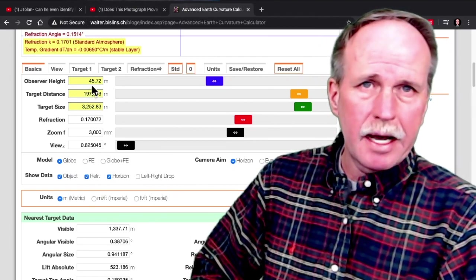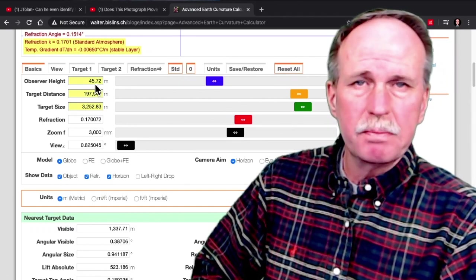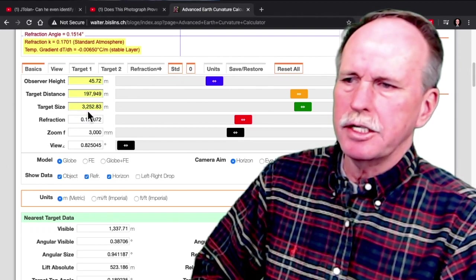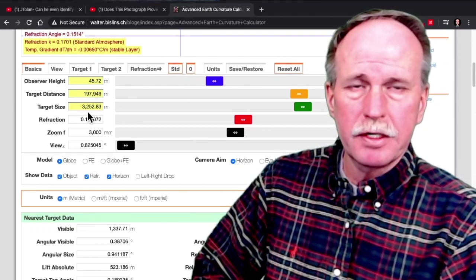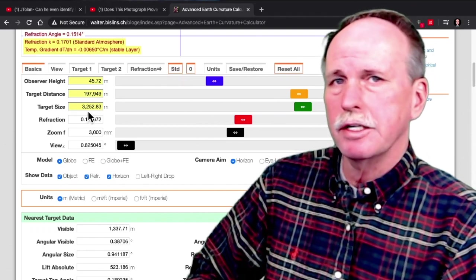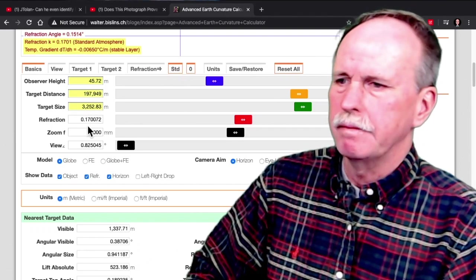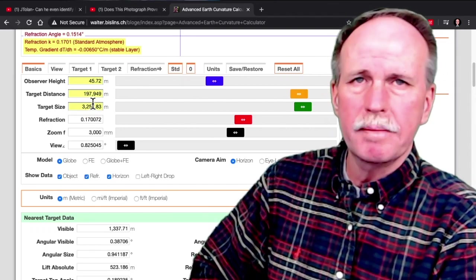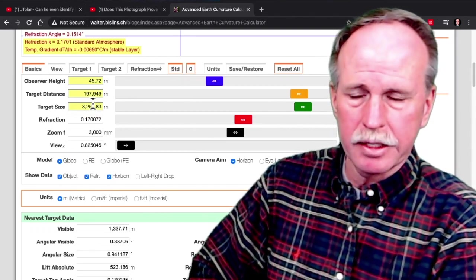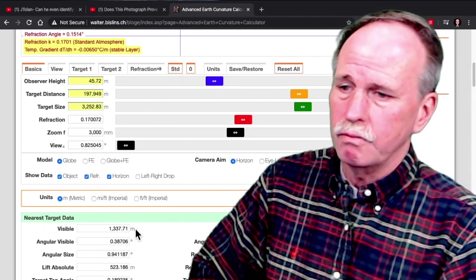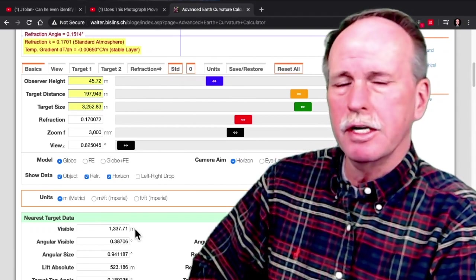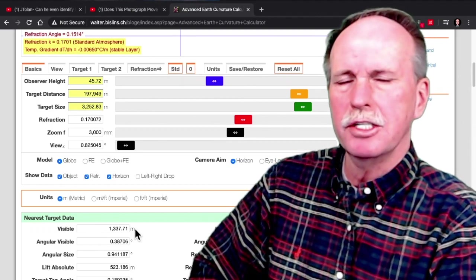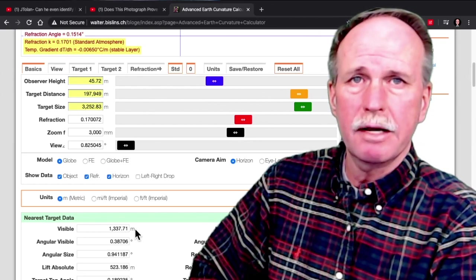Now, JTOLAN's observation point was approximately 150 feet off of the beach. So we're going to go ahead and go to Walter Bislin's Advanced Earth Curve Calculator, and let's see how much of Mount San Jacinto should be seen. So as you can see, here we are at Bislin's Advanced Earth Curve Calculator. We've got the observation height of about 46 meters, which is about 150 feet. The target size is 3,252 meters high, or 10,672 feet. And our distance is 198 kilometers, or 123 miles. Now, according to this, we should have 1,337 meters of the top of that mountain visible from that distance.